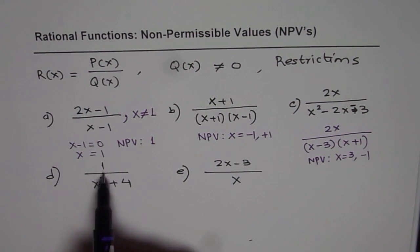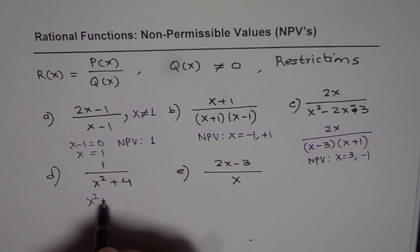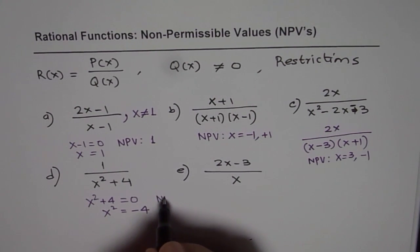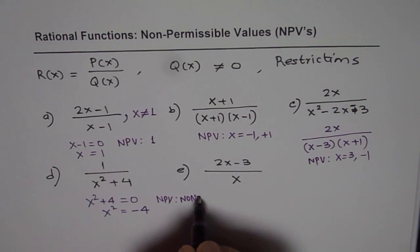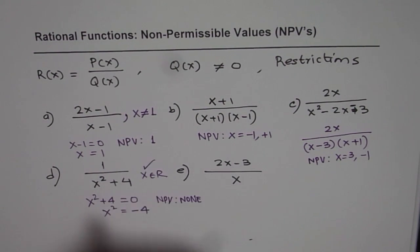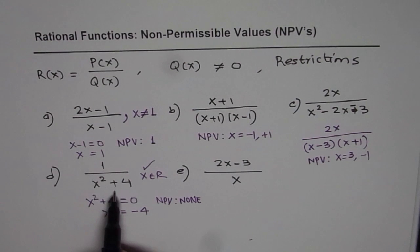Here we have 1 over x squared plus 4. Let us equate x squared plus 4 to 0. We get x squared equals negative 4. You know x squared cannot be a negative number, it has to be positive. So here the non-permitted values are none. Here the domain is x belongs to real numbers. There is no restriction for this function.